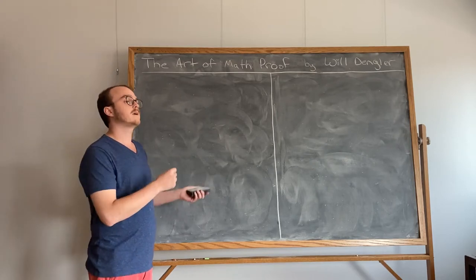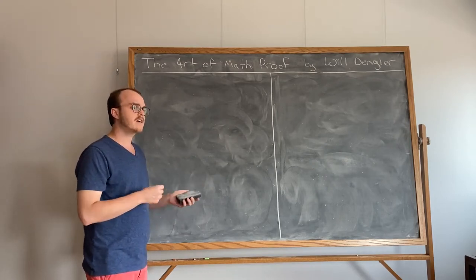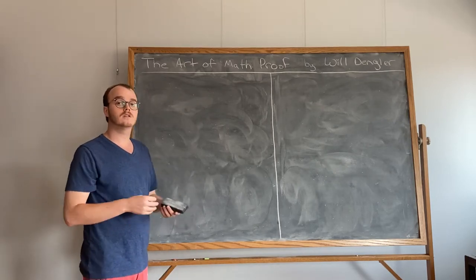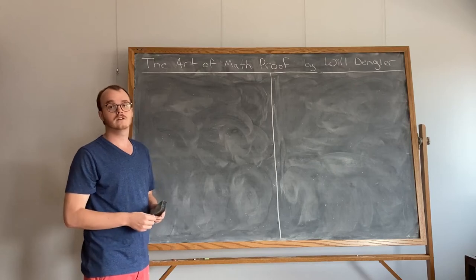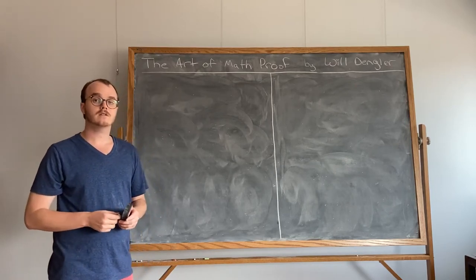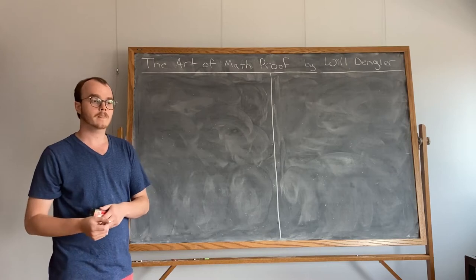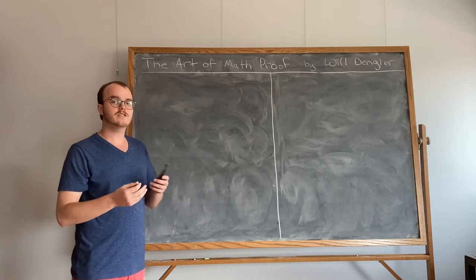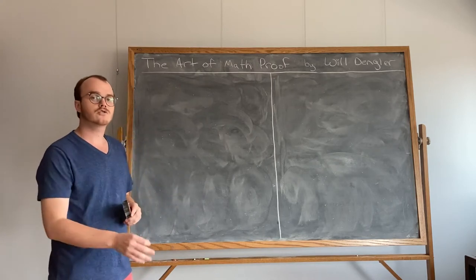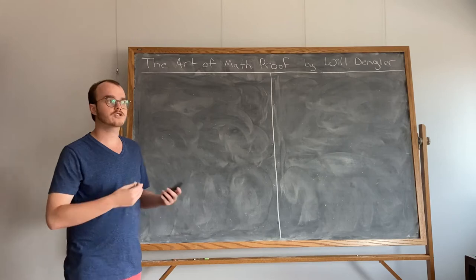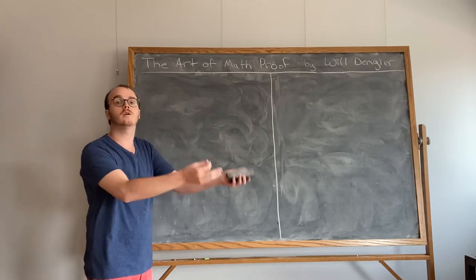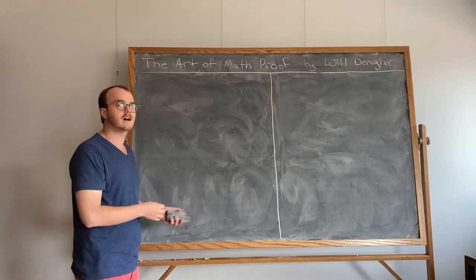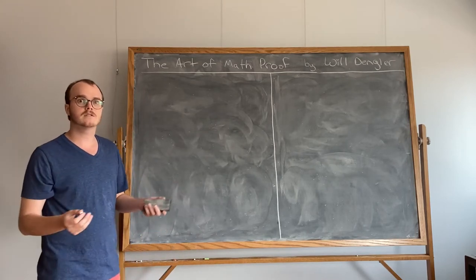What is a math proof? A math proof in a very abstract sense is simply a formal, logical argument that shows a mathematical statement is true. This definition doesn't really help us too much in truly understanding what a math proof is. After all, I can't take this definition and just go and write a math proof. I can't even take this definition and identify what a math proof is using it.